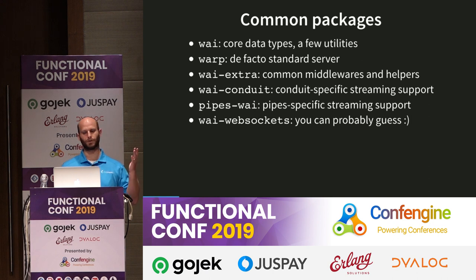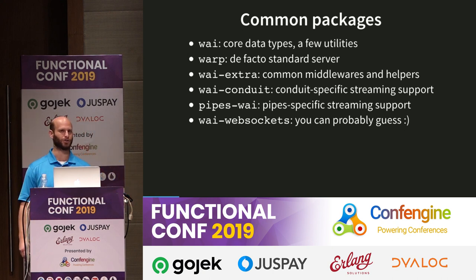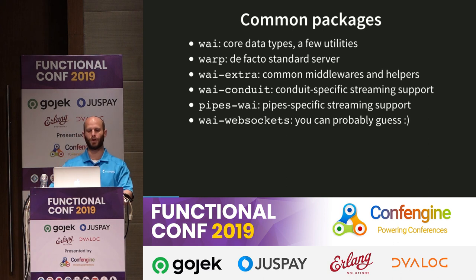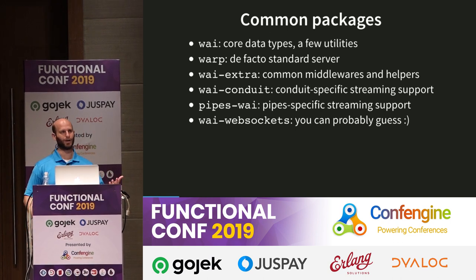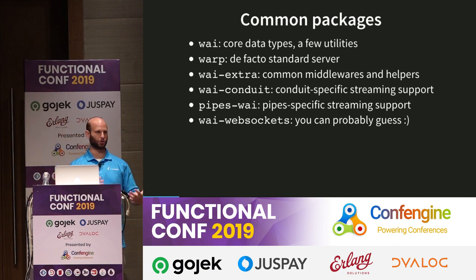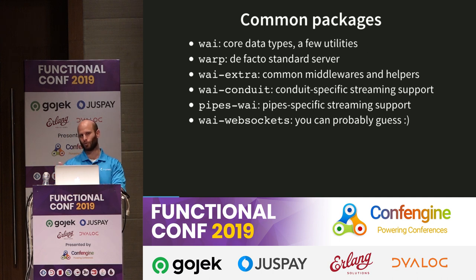The WAI package itself includes the core data types and a few tiny utility functions. Warp is the package that provides what we'd call the de facto standard server — at least 99 out of 100 times, if someone says WAI web server, they're talking about Warp. WAI-extra is kind of where the batteries get thrown: it's got middlewares, helpers, and parsing stuff. WAI-conduit is an interface to let WAI and streaming data tie together. And to prove the point that WAI is unopinionated, pipes-wai also exists. Finally, WAI-websockets lets you work with WebSockets in WAI.